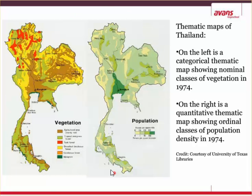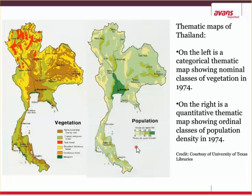On the right is a quantitative, number-oriented map. In Bangkok, the capital of Thailand, you see the highest population because it's dark green. On this scale, dark green means a population of more than 202 people per square kilometer. The least populated areas are cream-colored, between zero and one person per square kilometer. This map was made in 1974, and all these Thailand maps were taken from the University of Texas Library website.